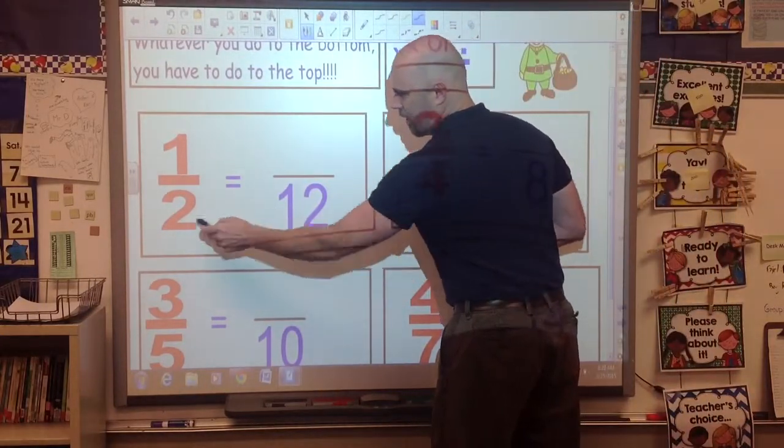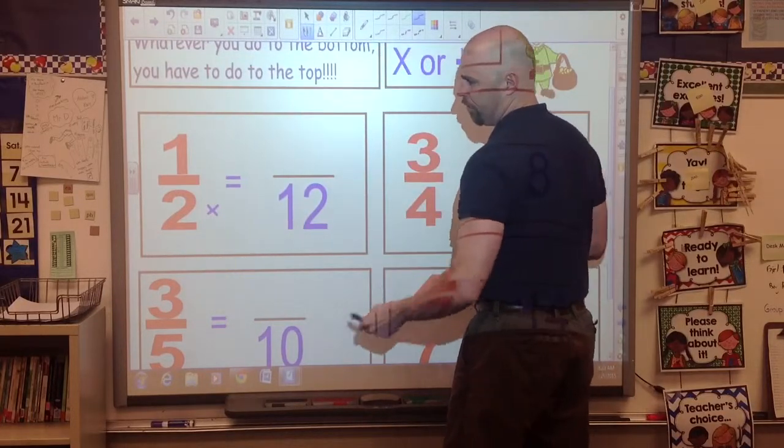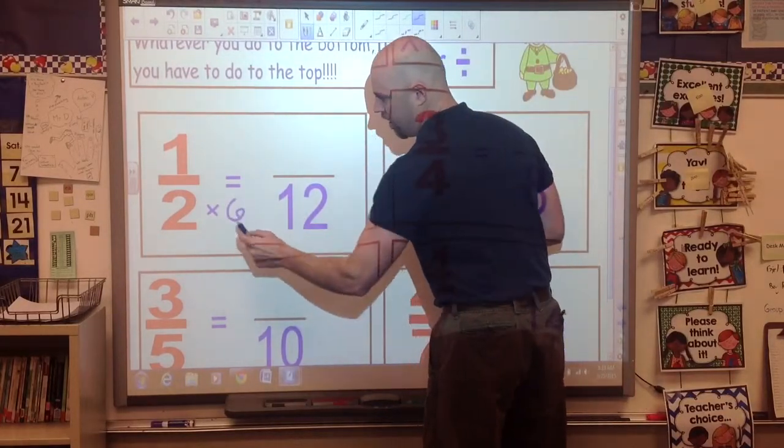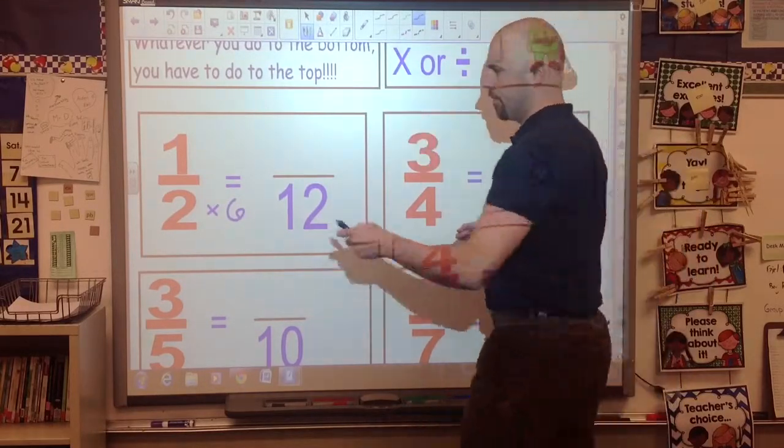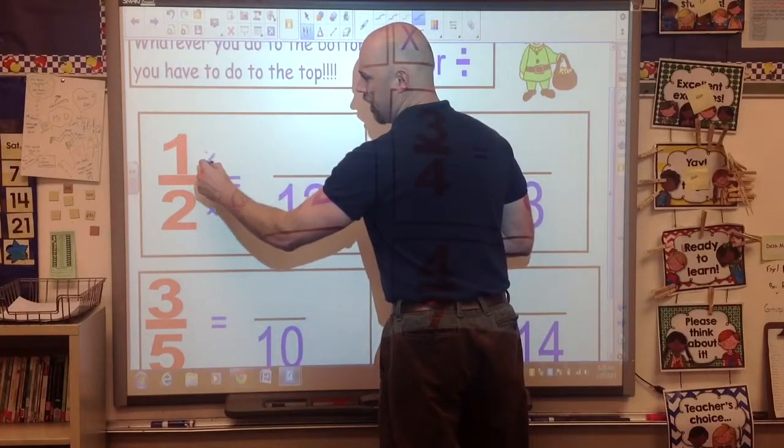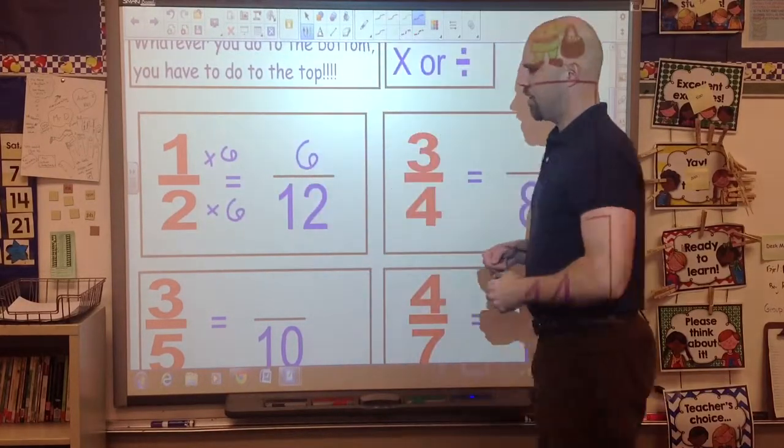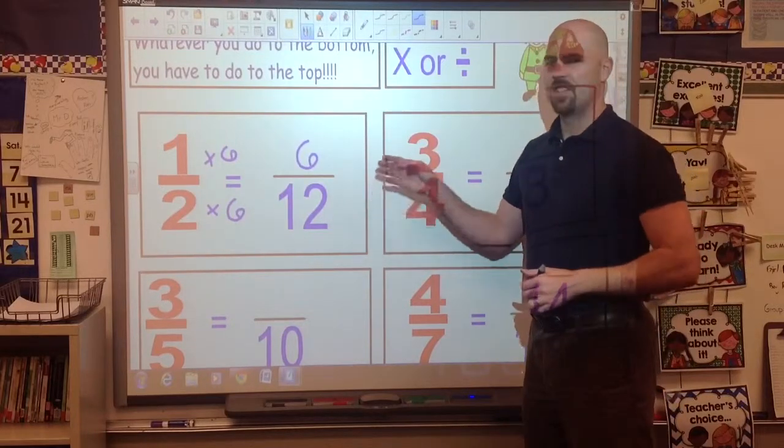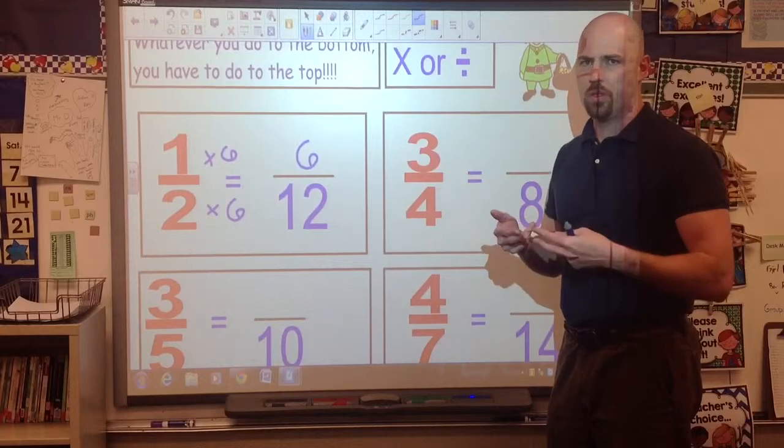So for this one, I'm going to put a disguise on. Two times what gives me a twelfth? Well, that's going to be a six. And our rule is, whatever you do to the bottom, you have to do to the top. So I did times six here. I'm going to do it up here. One times six. And our disguise is six twelfths. Six twelfths is an equivalent fraction to one half. They are equal to each other.